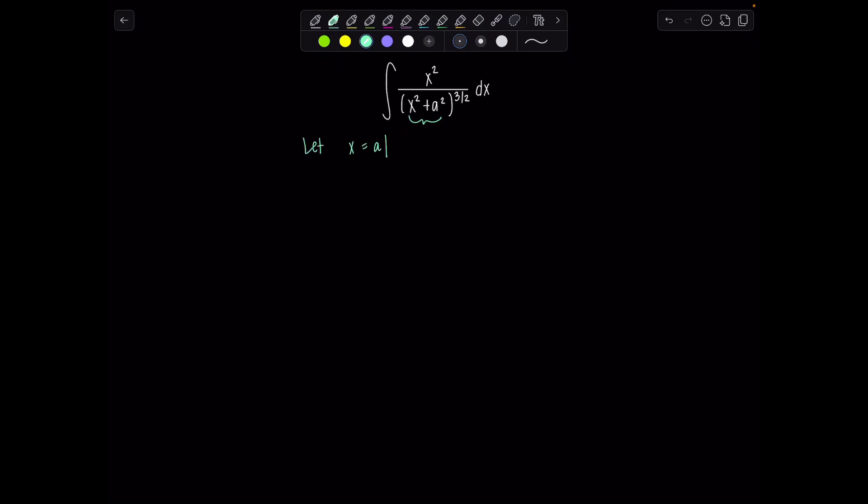I'm going to let x equal a tan theta and remember theta is restricted. You don't have to always write the restriction down unless your instructor wants you to. In this case for tangent between negative pi over two and pi over two. This is important later when we're simplifying. So differentiating both sides, dx is going to be a secant squared theta d theta.